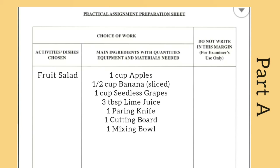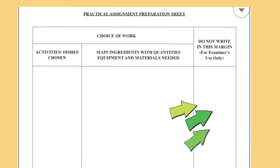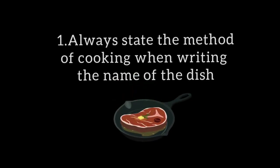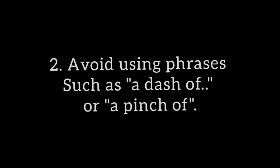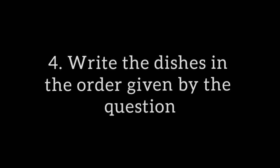I went ahead and filled in the second column for example purposes only. If you look closely, you can see that I put the measurement along with the name of the ingredient, and also the tools I will be using to make the fruit salad. The third column says 'Do not write in this column' — that's for examiner use only. Guidelines for Part A: always state the method of cooking when writing the name of the dish; avoid phrases such as 'a dash of' or 'a pinch of'; garnishes and decorations may be listed in the second column; and name the dishes in the order given by the question.